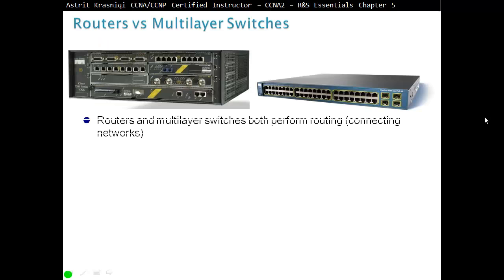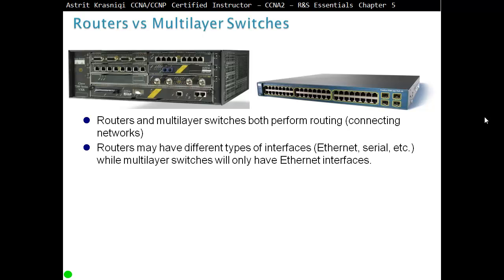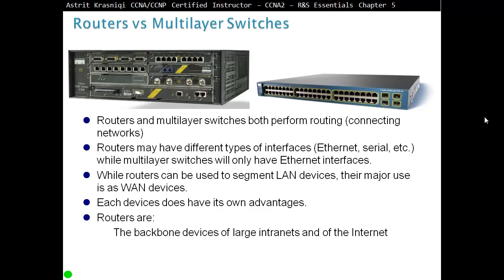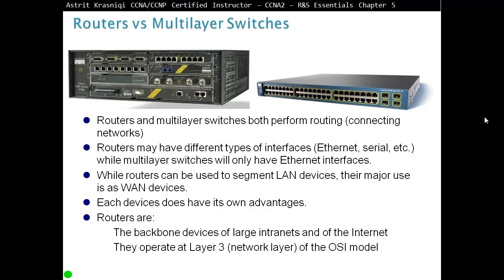Routers and Multi-Layer Switches both perform routing, connecting different networks and remote networks. Routers may have different types of interfaces — Ethernet, Serial, and others — while Multi-Layer Switches will only have Ethernet interfaces. While routers can be used to segment local area network devices, their major use is for wide area network devices. Routers are the backbone device of large intranets and of the internet. They operate at Layer 3, the network layer of the OSI model, and make decisions based on network addresses like IPv4 and IPv6.